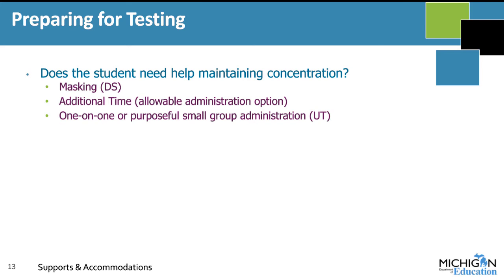Masking is an option within the system that allows a student to place a resizable solid-color box over portions of the screen that may be distracting to them. Students can also have additional time if they need it — this is not categorized as a universal tool, designated support, or accommodation, but is actually an allowable administration option. You could also consider doing one-on-one or purposeful small group administrations, which is considered a universal tool available to every student.